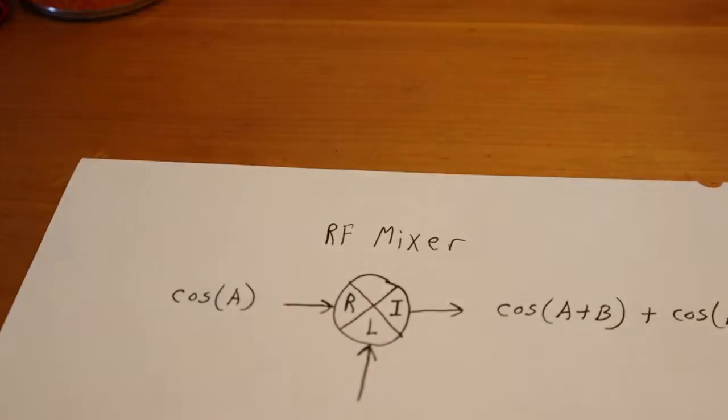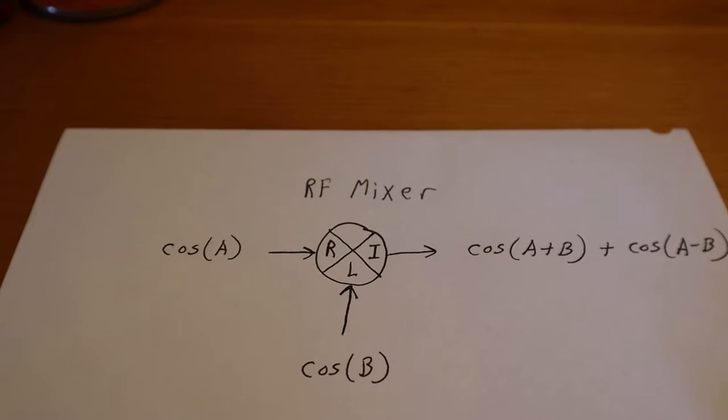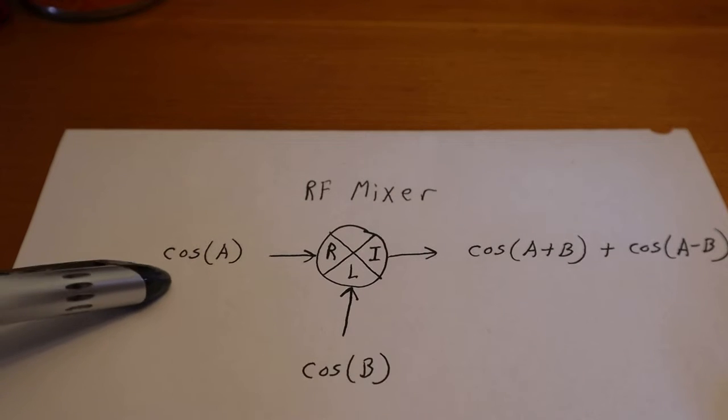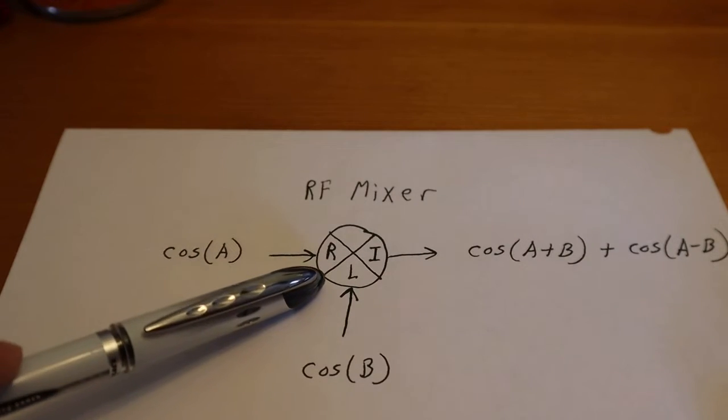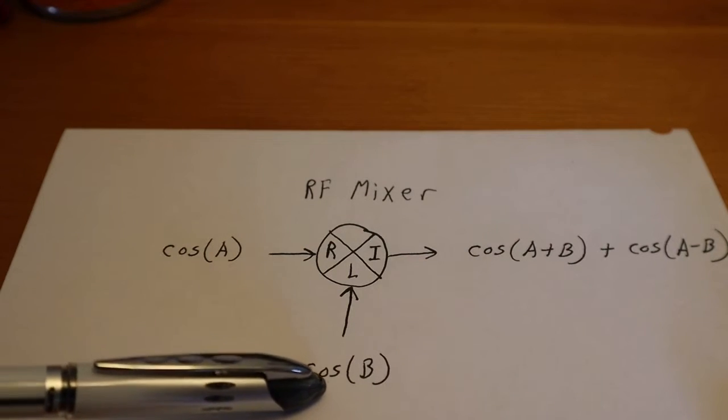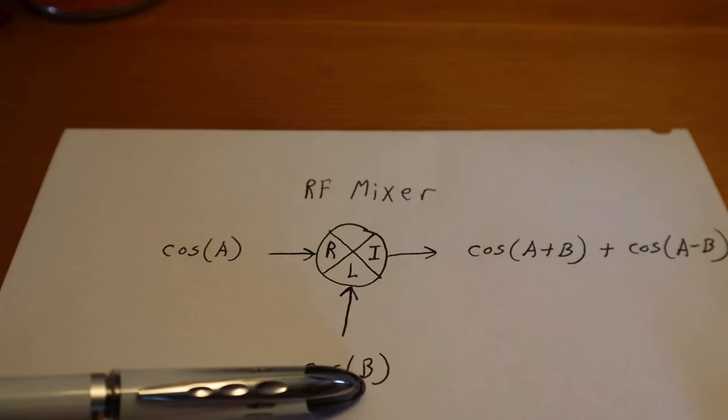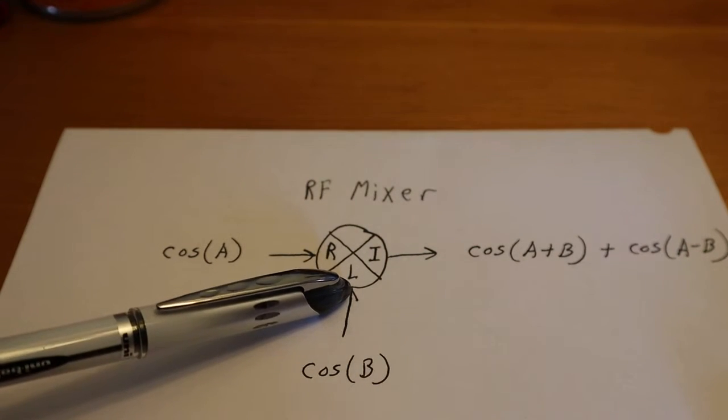So what tool do you think we can use that does that? Well, there actually is a tool out there. And that's called the RF mixer. Basically, you take the cosine wave A with frequency A, and it goes into the R port of the mixer. And you have the radio wave or cosine signal frequency B, and that goes into the L or local oscillator point of the mixer.